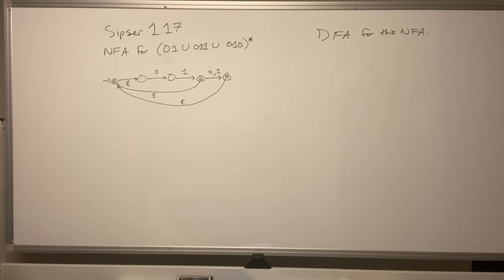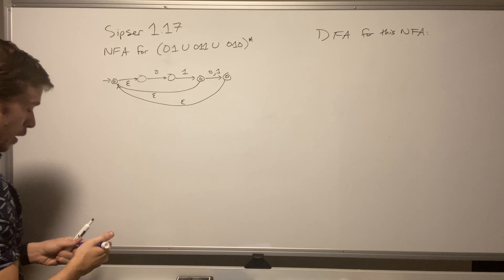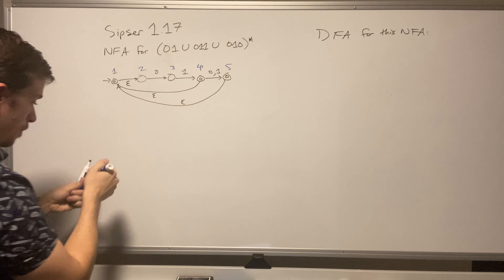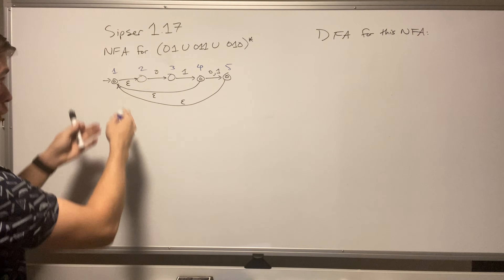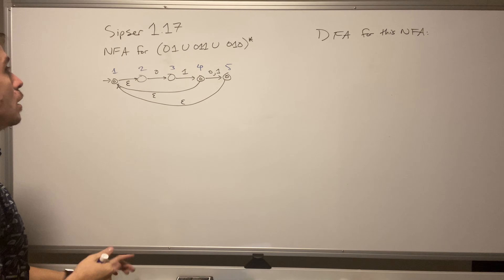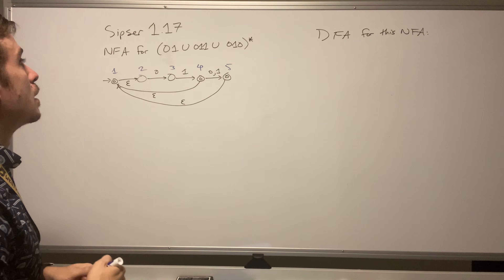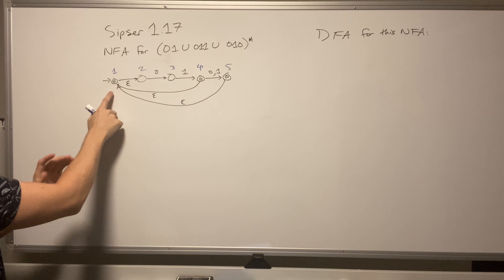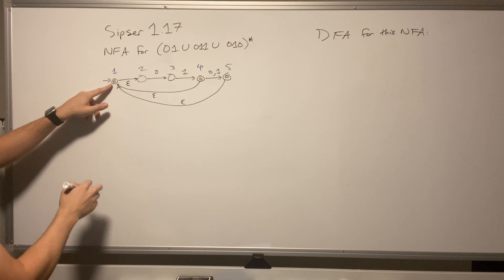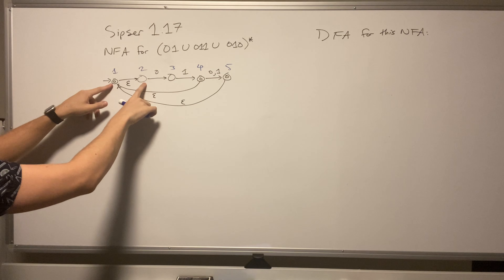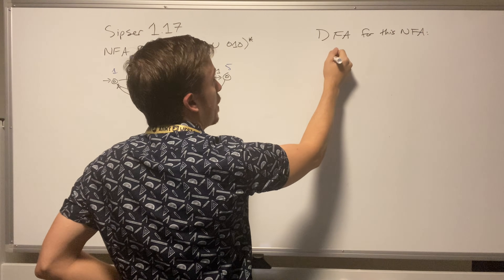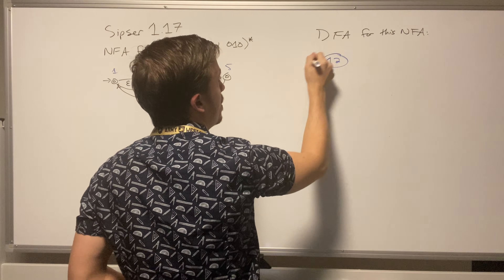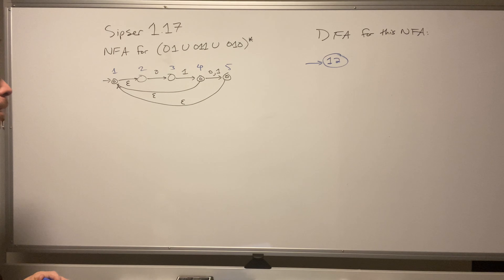That's a quick NFA for this — there are many other ways you could do it. I'm going to label these states as one, two, three, four, and five. Now when I make the DFA I can refer to sets of NFA states. We always need to consider the epsilon closure of any state we're in. The start state of the DFA is the epsilon closure of the start state — where you can go only on epsilon transitions. From state one I can stay there or go to two, so the DFA start state is called one-two.